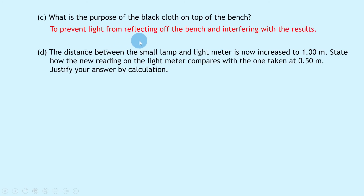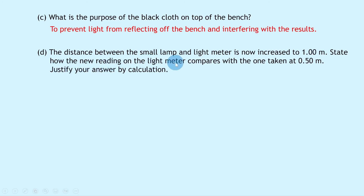Part c asks about the purpose of the black cloth on top of the bench. The reason is to prevent light from reflecting off the bench and interfering with the results. It's good practice to do this when carrying out this experiment in the lab.